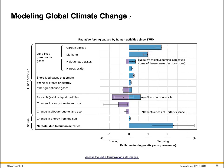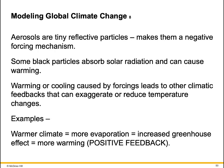Modeling global climate change and climate forcings: relative forcings (RFs) are expressed in watts per square meter. The warming effect of greenhouse gases was partially offset by forcings due to human activities, such as industrial pollutants in the form of reflective aerosols. Some forcing agents, for example clouds, have considerable uncertainty as to their degree of forcing. The net effect of forcing is to warm the planet by 1.6 watts per square meter. Aerosols are tiny reflective particles, making them a negative forcing mechanism, though some black particles absorb solar radiation and can cause warming.